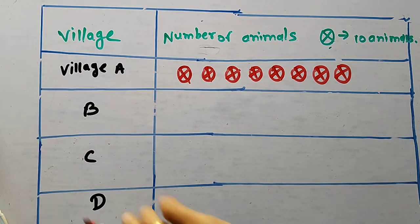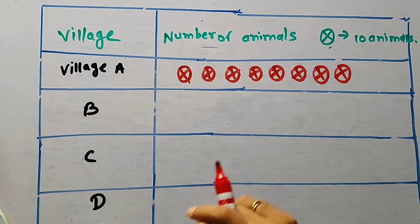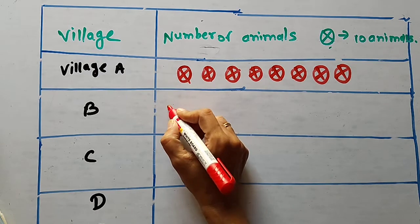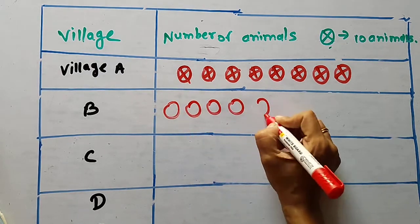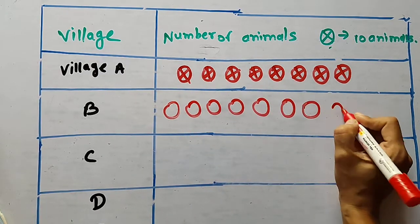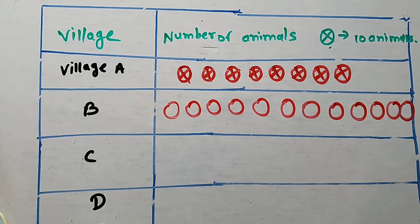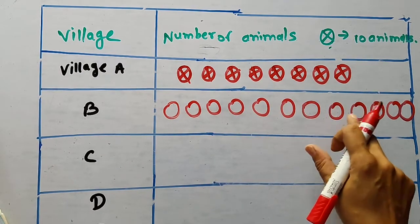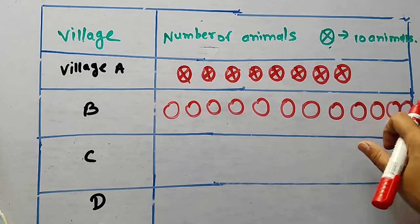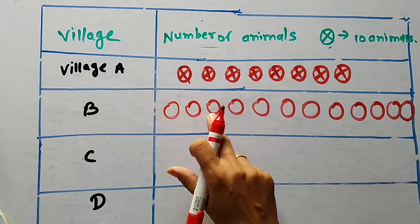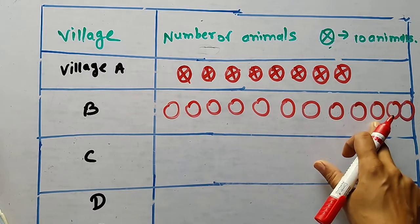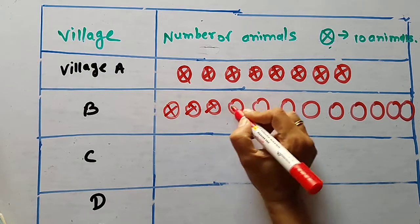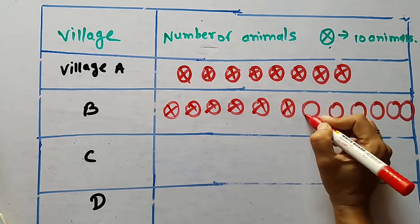Now in village B, how many? 120. For 120, ten times twelve gives 120, so you need 12 symbols: one through twelve. Ten, ten, ten added up: 10, 20, 30, 40, 50, 60, 70, 80, 90, 100, 110, 120. These 12 symbols represent 120 animals for village B.